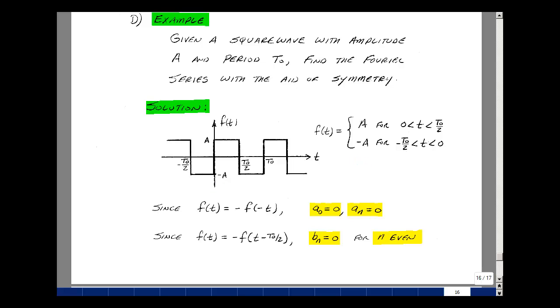Now, do we have even, odd, or half wave symmetry? If we had even symmetry, we take our f(t) and replace T by minus T. We clearly don't have even symmetry, but if we take the negative of that, then we have odd symmetry. And that implies that A0 is 0, and A sub n is equal to 0.